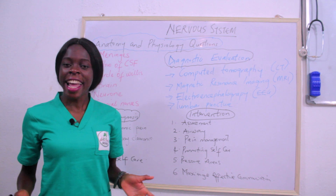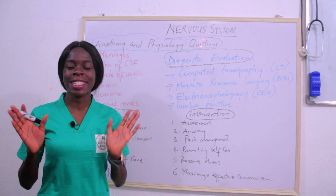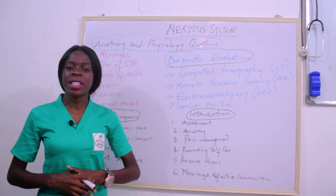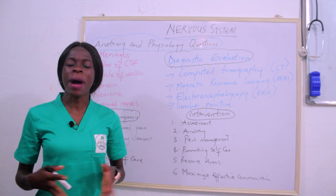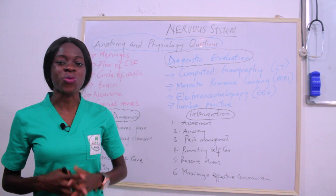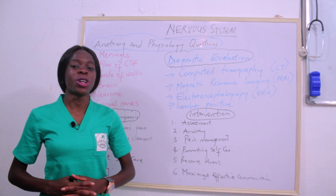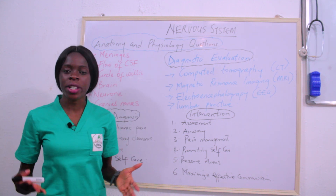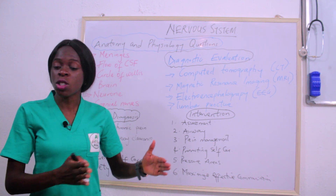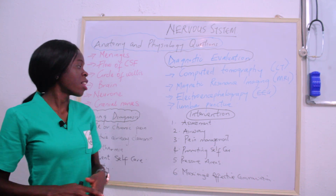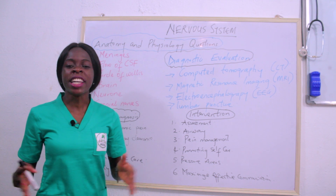Today we're going to give you some key facts relating to the nervous system. Before you get questions like what is unconsciousness, what is head injury, or what is Parkinson's disease, you first get questions relating to the anatomy and physiology of the nervous system. So here are some common anatomy and physiology questions you are likely going to get relating to the nervous system.